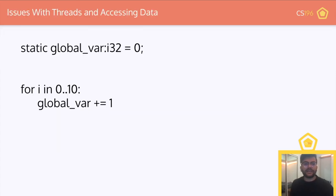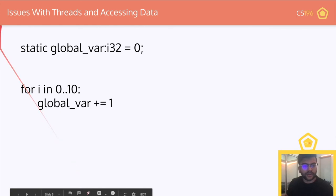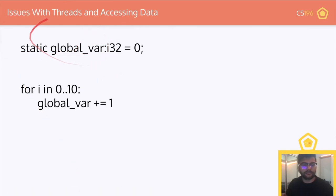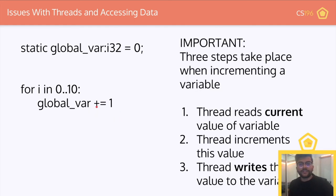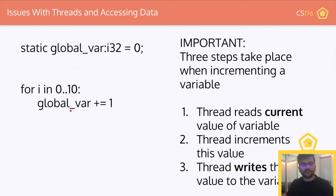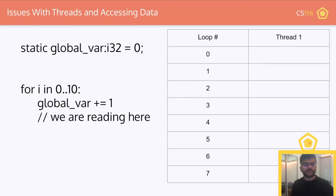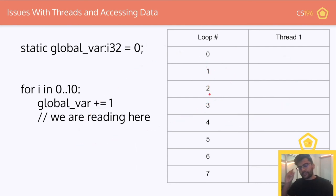Let's take this naive example. We have a global variable — we'll call it just static global var — it's an i32, starts from 0, and we're going to increment it from 0 to 10, incrementing it by one each time in the loop. There are three steps taking place when incrementing a variable: we first read the current value of the variable, the thread then increments this value, and finally the thread writes this value back to the variable. Three steps — it's not an instantaneous thing.